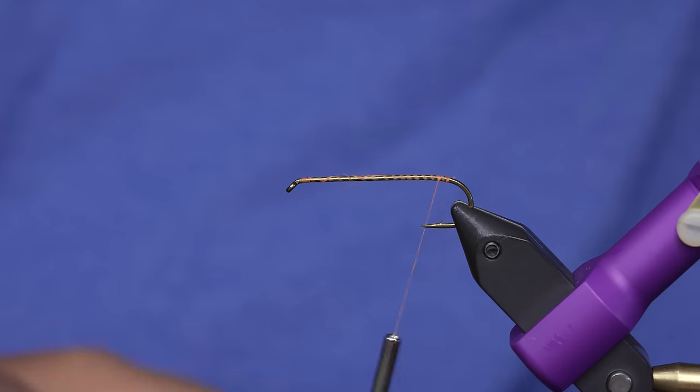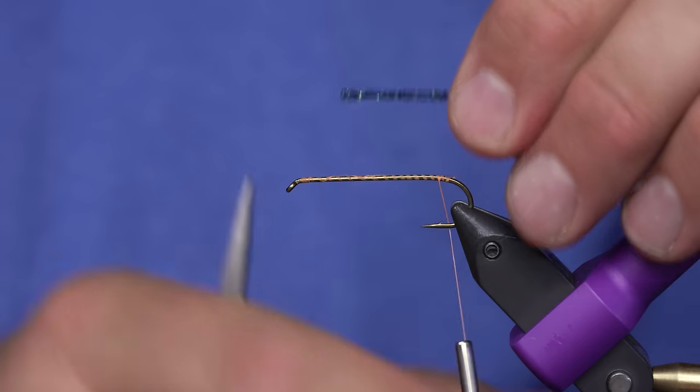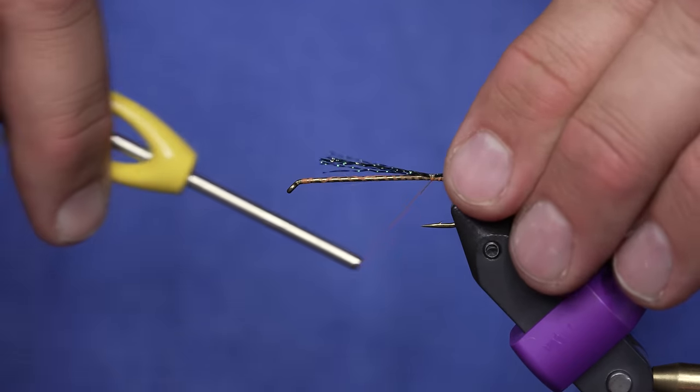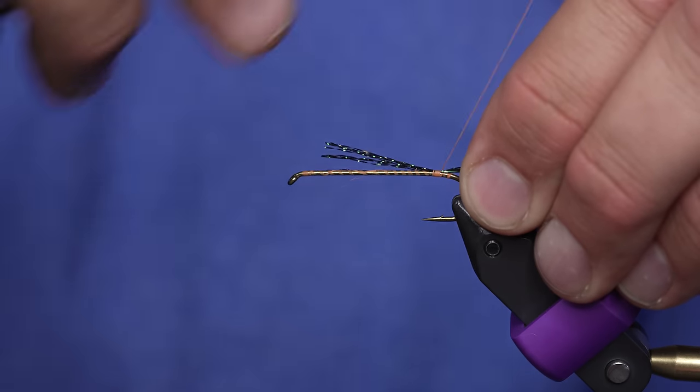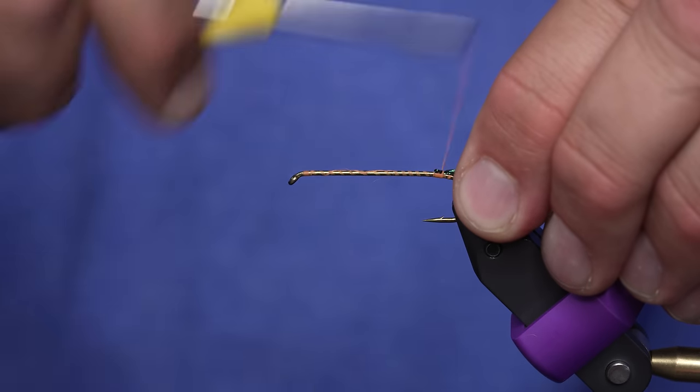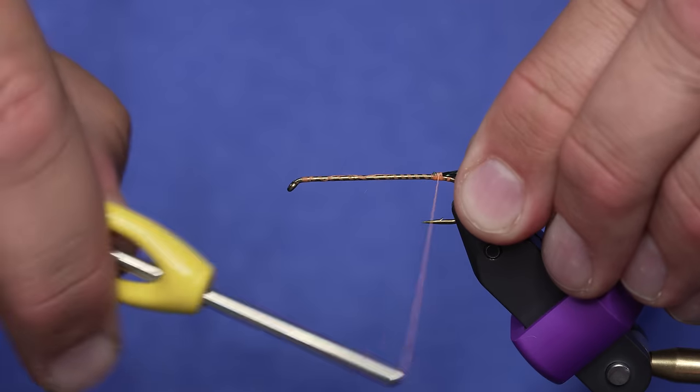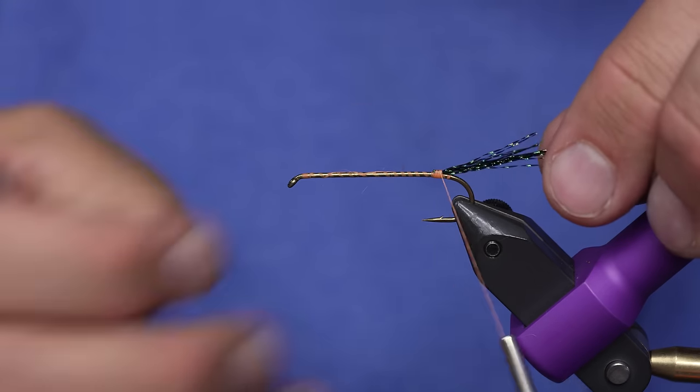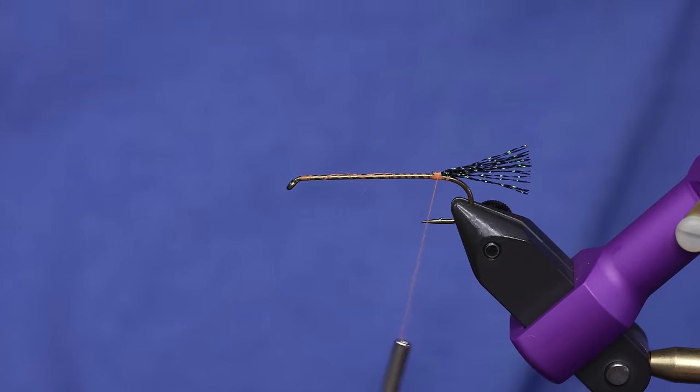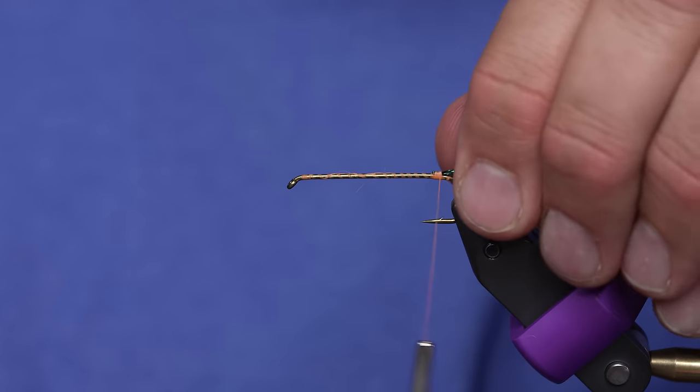And I'm going to add just a little bit of crystal flash in typical chubby style. This is just black crystal flash. Tie some in, double it over. For the recipe guys out there, this is exactly 14 and a half strands of crystal flash. Maybe, maybe not.